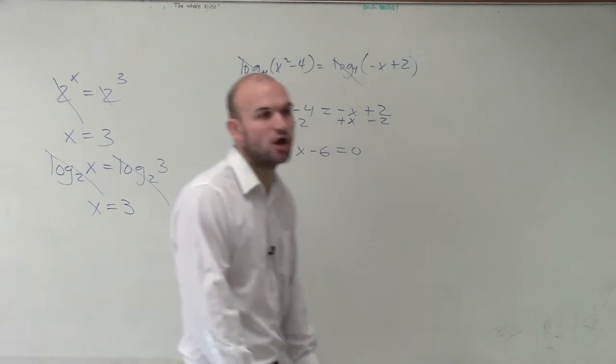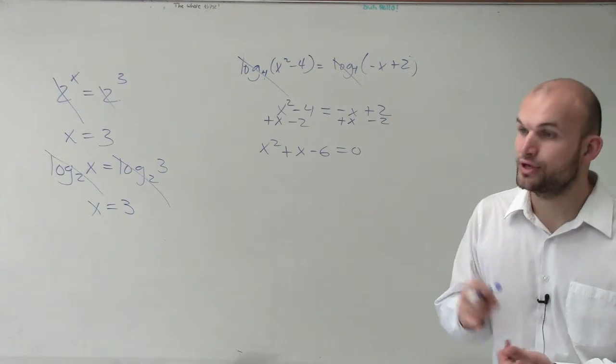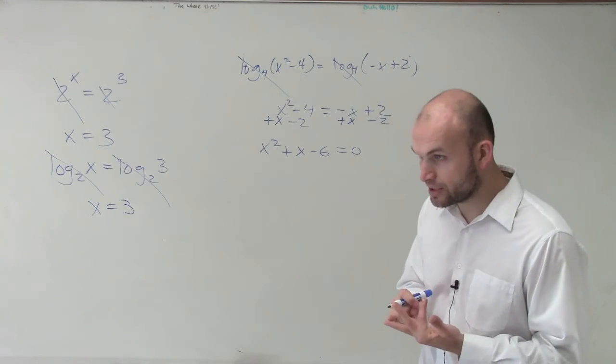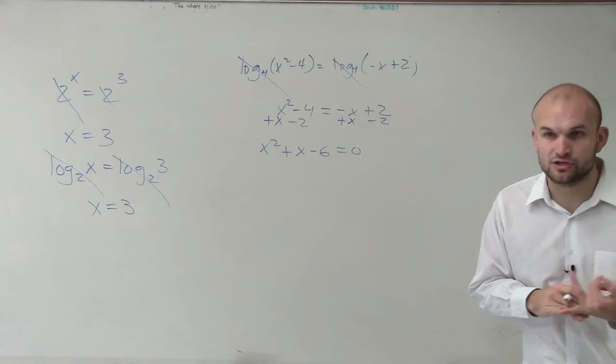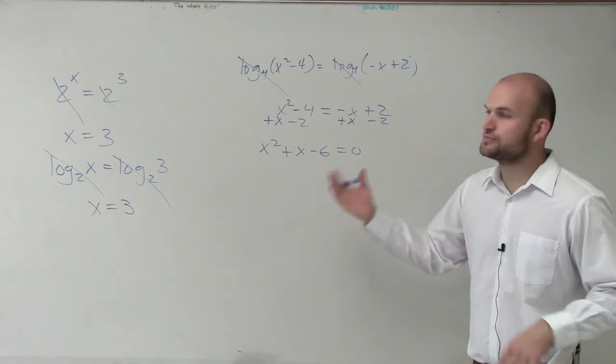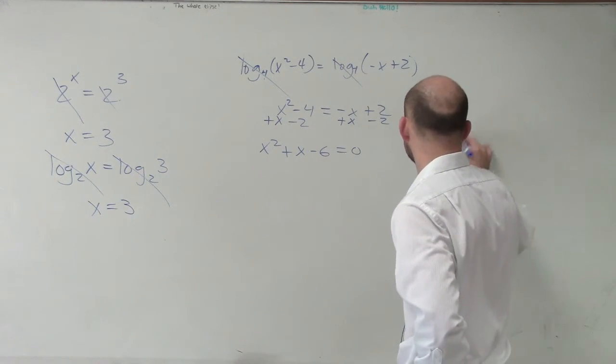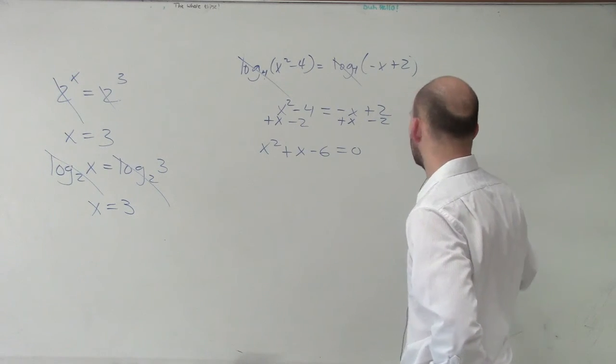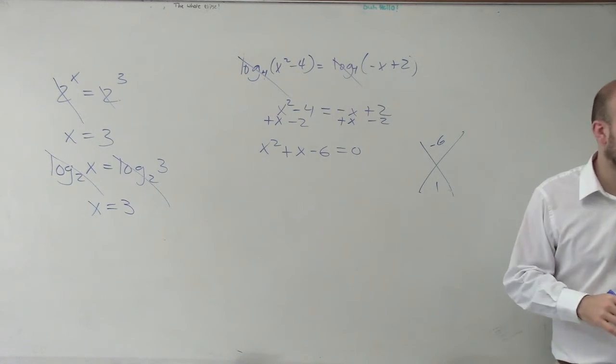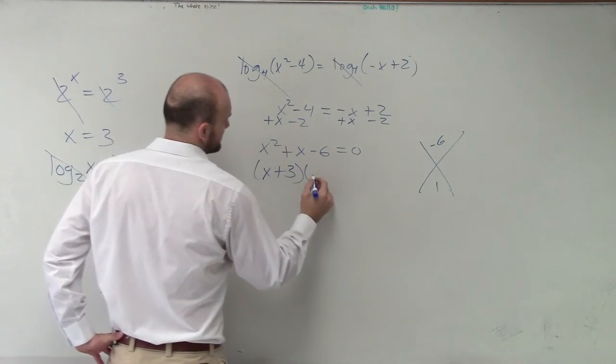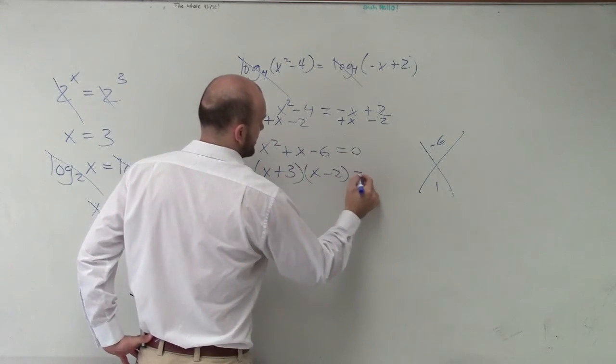Now, there are a couple ways we learned to solve a quadratic. We could factor, complete the square, use the quadratic formula, or graph it and find the intercepts. For this one, I always like to see can I factor this? You guys can remember - negative 6 and 1. What two numbers multiplied give you negative 6? 3 and negative 2. So, x plus 3 times x minus 2 equals 0.